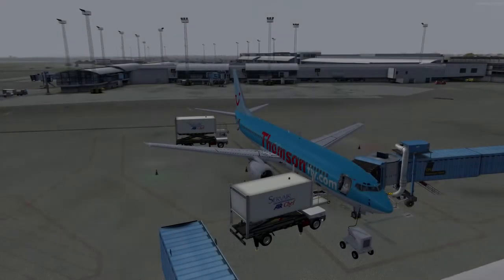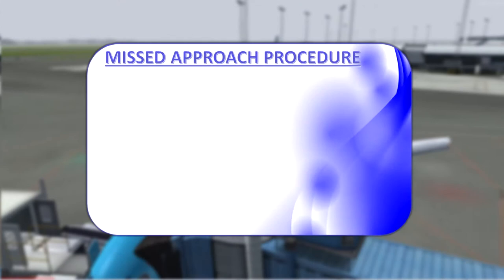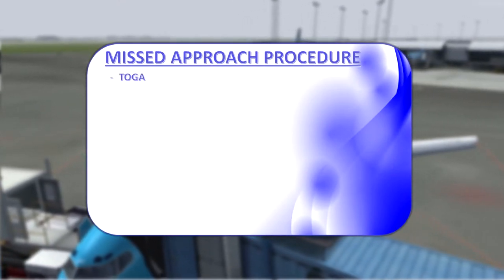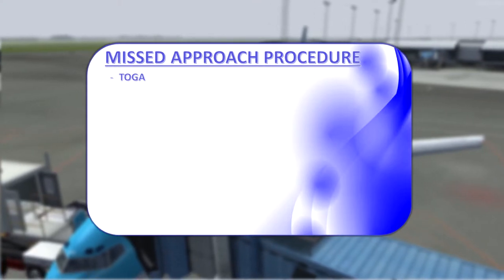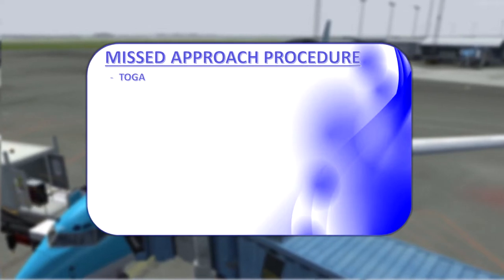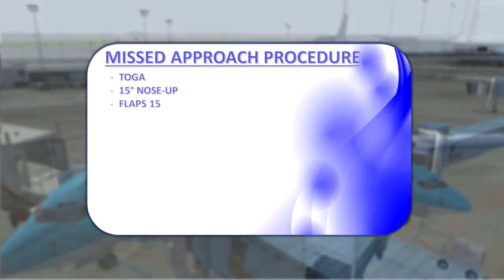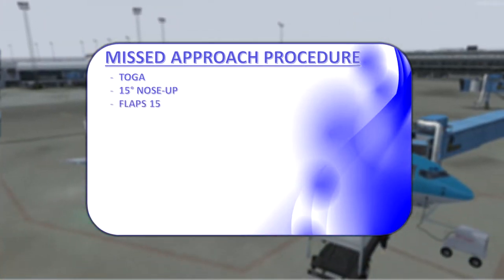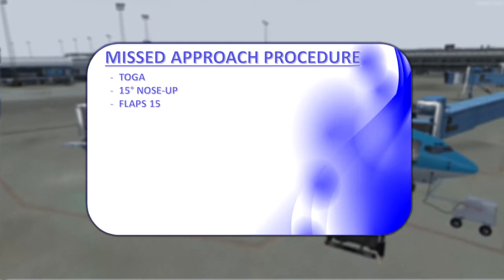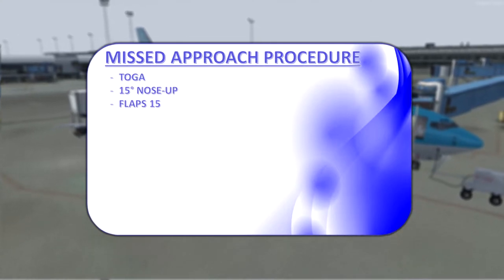First we'll go through the different steps which we must take once we decide to go around. The very first thing we will do is press TOGA — the takeoff go-around feature — which lets the onboard computers know that we are executing a go-around and will configure the plane for it. At the same time we will raise the nose to a 15-degree nose-up attitude and call for flaps 15. Lower flap settings such as 25, 30 and 40 produce too much drag, whilst higher settings like 1, 5 and 10 don't produce enough lift at the low speeds we have initially.